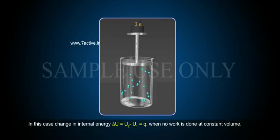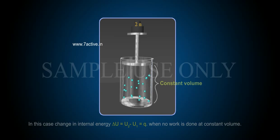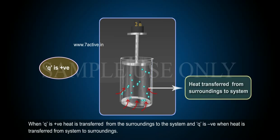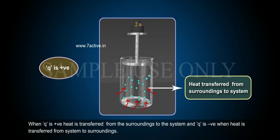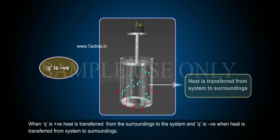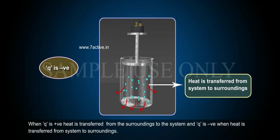When no work is done, at constant volume, the change in internal energy equals Q. When Q is positive, heat is transferred from the surroundings to the system. Q is negative when heat is transferred from the system to the surroundings.